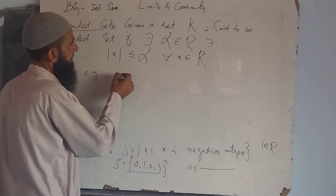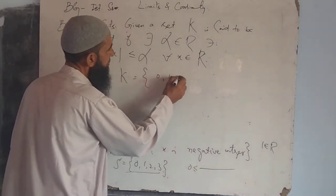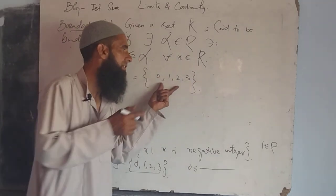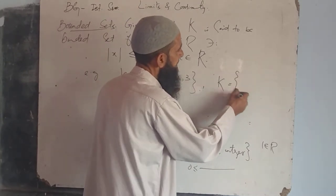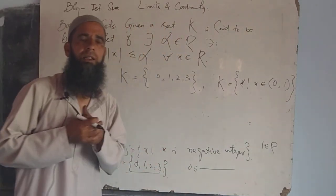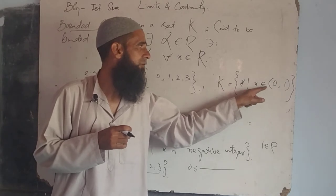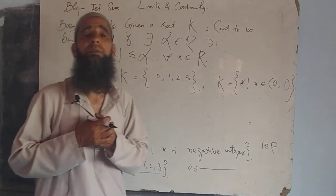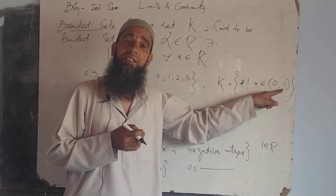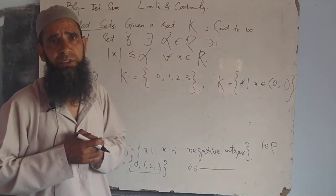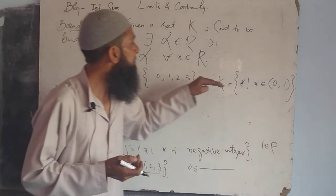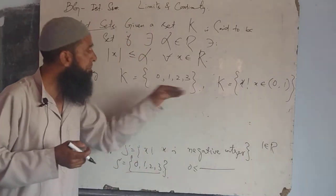Example: if K is equal to {0, 1, 2, 3}, clearly it is bounded below as well as bounded above, so this set is a bounded set. Another example: K equal to {X : X belongs to (0, 1)}, which is an interval. X is a real number lying between 0 and 1. Clearly this set is bounded below since every member is greater or equal to 0, and all members are less or equal to 1, so it is bounded above. Therefore it is bounded below as well as bounded above — it is an example of a bounded set.